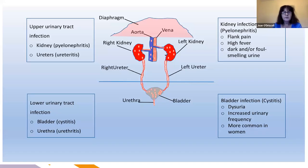In the urinary tract, we can have urinary tract infections affecting the upper or lower urinary tract. The upper urinary tract involves infections of the kidney — pyelonephritis — or the ureters — ureteritis — characterized by flank pain, high fever, and dark or foul-smelling urine. The lower urinary tract involves infections of the bladder and urethra causing cystitis, with symptoms of dysuria and urinary frequency, which is more common in women.